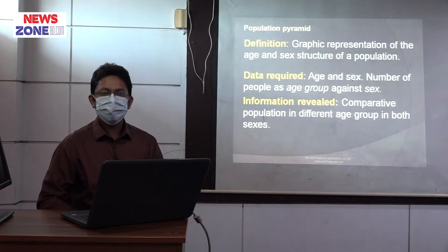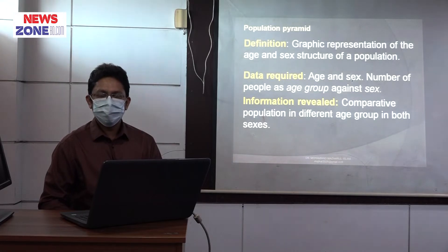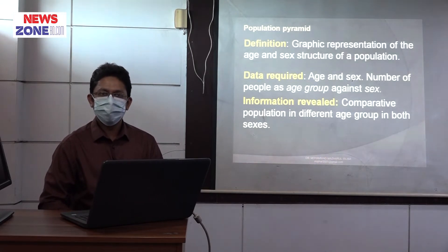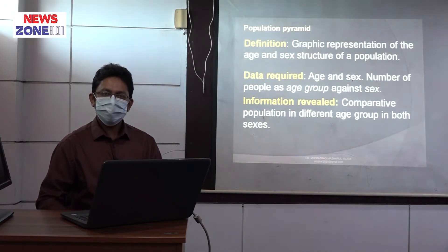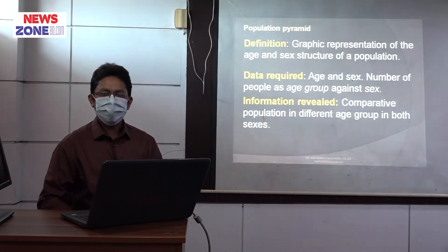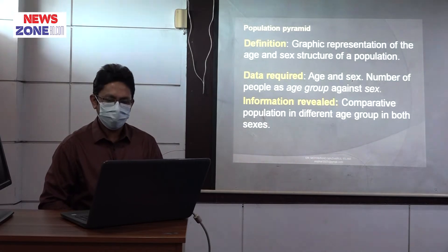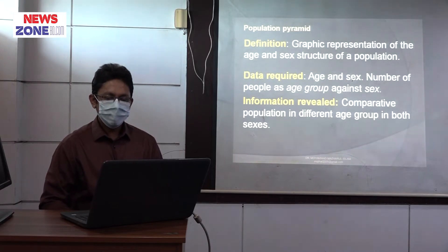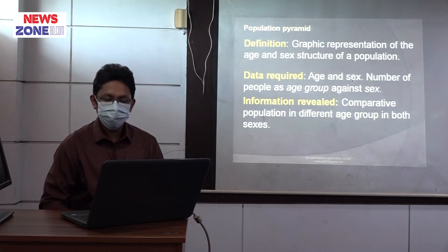The age groups shown in a population pyramid include 0 to 5 years, 6 to 10 years, 11 to 15 years, and so on. The information we get from the population pyramid is the comparative population in different age groups in both sexes.